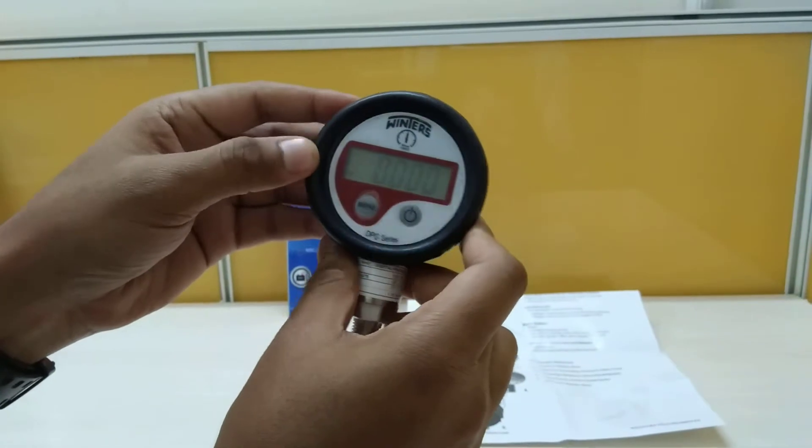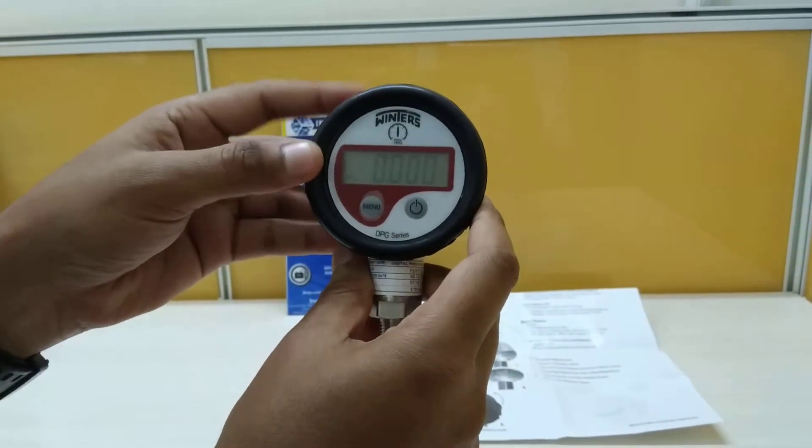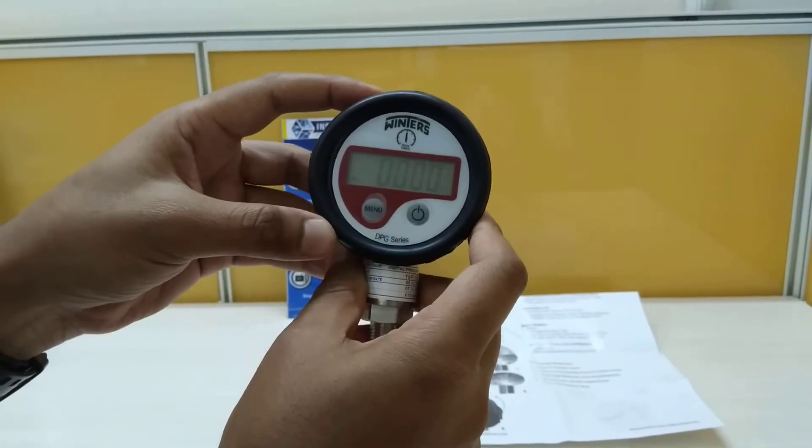The storage condition for this gauge is minus 4 degrees Fahrenheit to 167 degrees Fahrenheit.